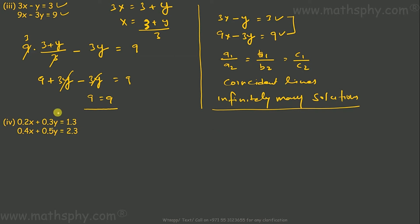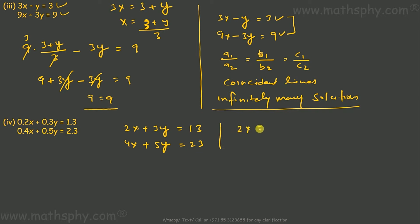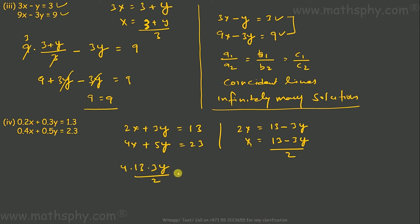Let's look at the next problem with decimals. I'll multiply the first equation by 10 to clear decimals: 0.2x times 10 gives 2x, giving 2x plus 3y equals 13. The second equation becomes 4x plus 5y equals 23. From the first equation, 2x equals 13 minus 3y, so X equals (13 minus 3y) over 2. I have the X value and will replace it in the second equation.